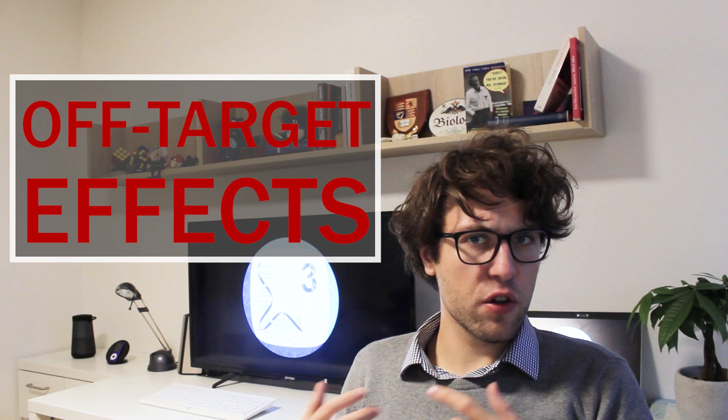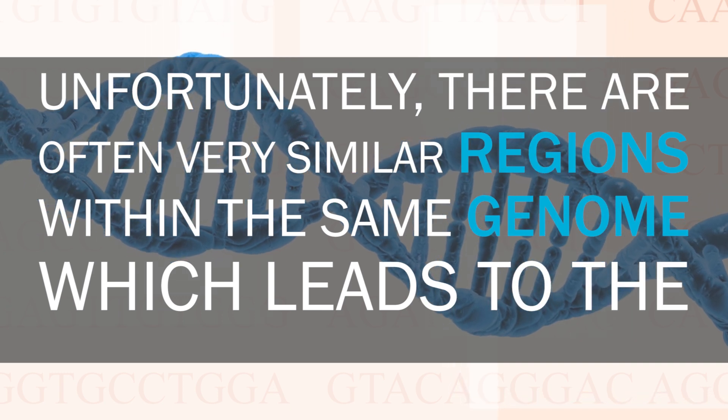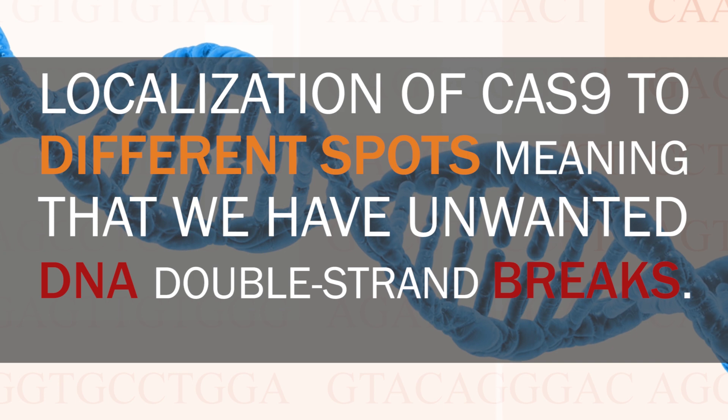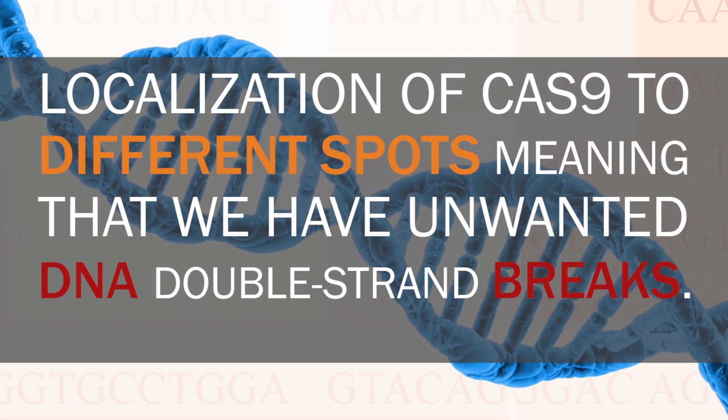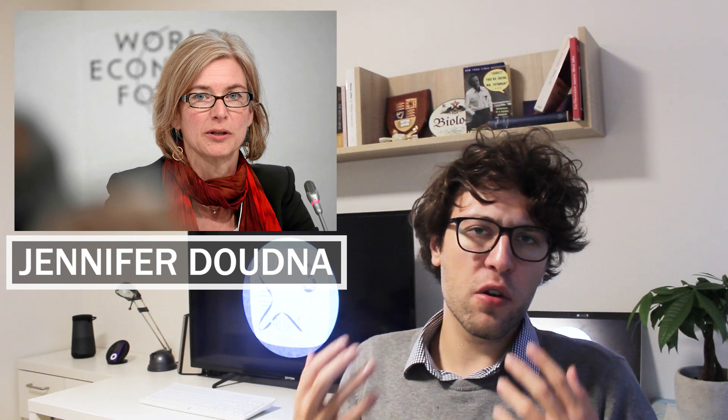Moreover, off-target effects might also occur if we use genome editing. As already mentioned, we use a guide RNA which leads to the localization of Cas9 to a certain DNA sequence. Unfortunately, there are often very similar regions within the same genome, which leads to the localization of Cas9 to different spots, meaning that we have unwanted DNA double strand breaks. As a consequence, further mutations might be introduced to the genome — which is not very dramatic if we work with cell lines, but imagine that we try to cure a patient who suffers from a genetic disease. Last year I attended a lecture given by one of the pioneers of CRISPR-Cas9 editing, Jennifer Doudna, at the Royal Society, and her data clearly shows that we still struggle with off-target effects.